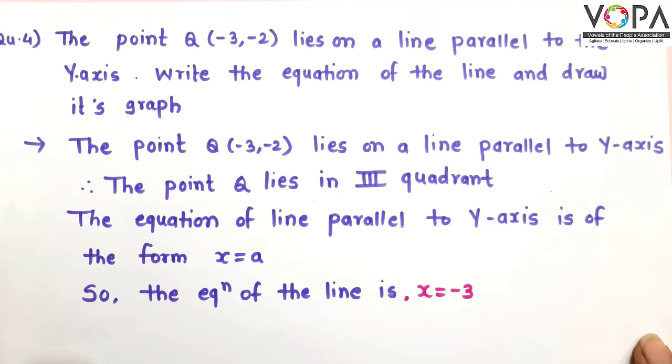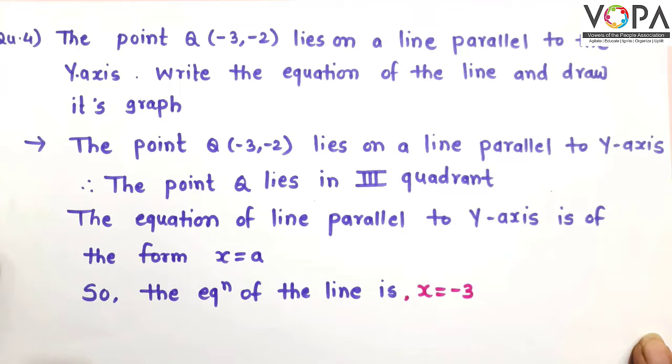Next, question number 4. The point Q(-3,-2) lies on a line parallel to y-axis. Write the equation of line and draw its graph.